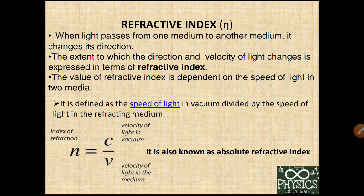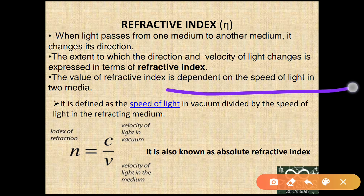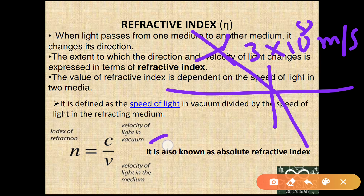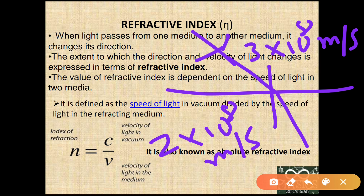Whenever light travels in vacuum or air, it travels at approximately 3×10⁸ meters per second. As soon as the light changes its medium, its direction of motion changes and its speed also decreases. For example, in glass the speed of light is 2×10⁸ meters per second — that is, from 3 lakh km/s it decreases to 2 lakh km/s. So the direction and speed of light both change when it changes its medium of propagation.